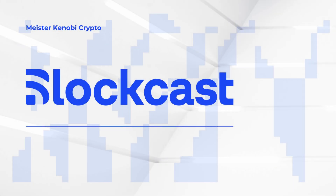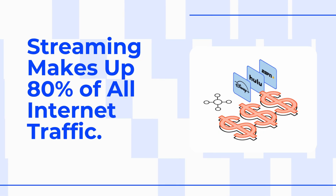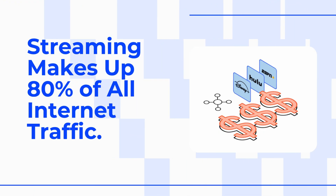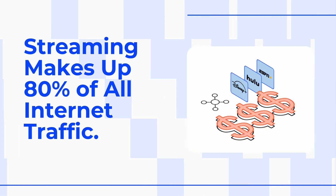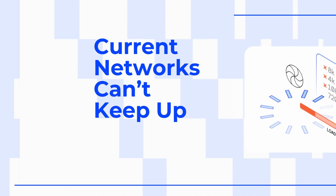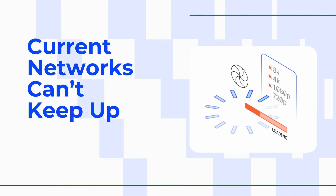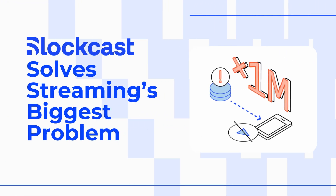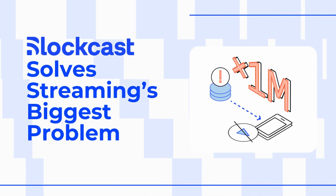BlockCast is a new decentralized solution to one of the biggest internet problems. Streaming makes up over 80% of all internet traffic, but current networks weren't built for this. BlockCast solves this by doing something totally different.